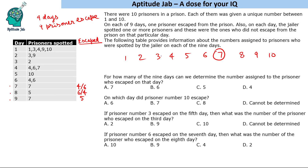Now let us look from the beginning. In the beginning, prisoners 1, 3, 4, 9, 10, and 2 are all mentioned as spotted. Prisoner 8 is not mentioned anywhere. That means on the first day, prisoner number 8 escaped, because all the others were spotted later. So on the first day, prisoner number 8 escaped.